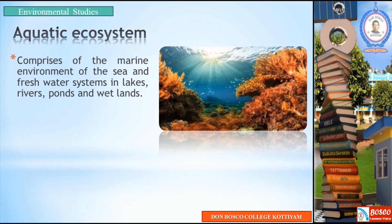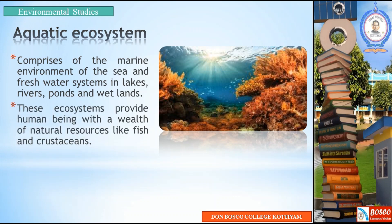An aquatic ecosystem comprises of the marine environment of the sea and freshwater systems in lakes, rivers, ponds, and wetlands. Aquatic ecosystems include a variable number of types of water bodies. Marine environments include the sea and ocean, while freshwater systems include lakes, rivers, ponds, wetlands, etc.